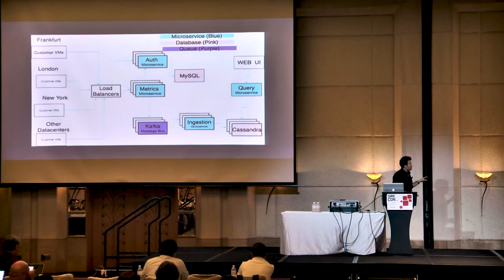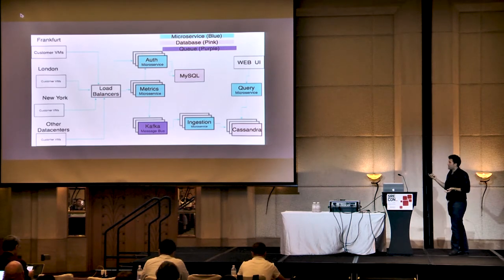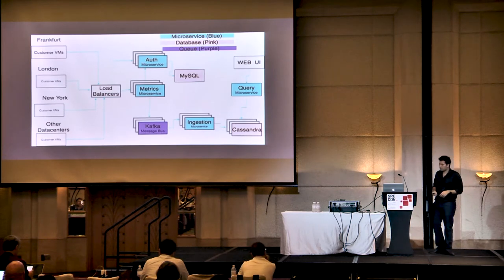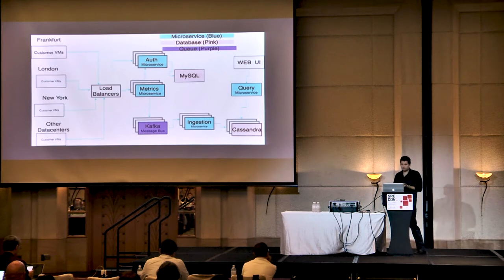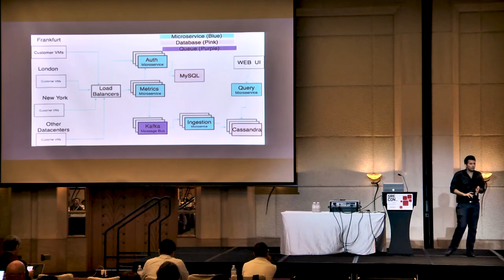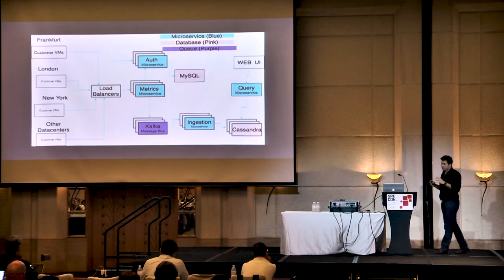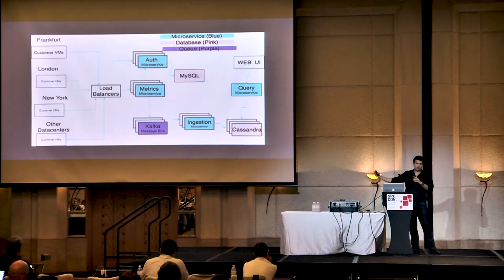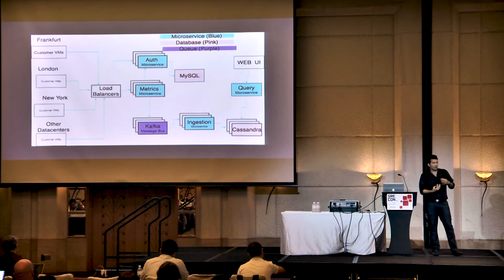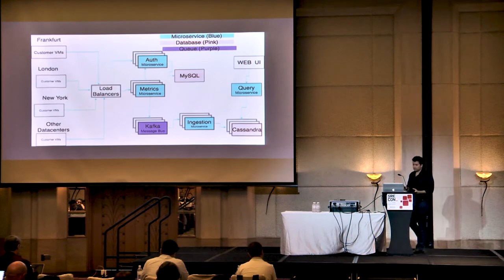Our application is typical of the new microservice architecture. We have authentication microservices, microservices that ingest metrics from users, and three different databases: Kafka as a queue, MySQL, and Cassandra. We have microservices that interact with users on the front end — some exposing APIs to JavaScript — and some that are only exposed to other machines. It's a very typical microservice architecture.